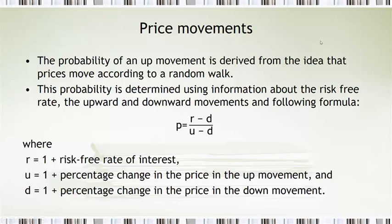Now the probability of an up movement is based on a random walk. And that's why we get this strange-looking formula here, but it is based on a random walk. And we use the risk-free rate of interest, r, which is really 1 plus that. So if r is, you know, if the rate is 5%, r in this formula is 1.05.